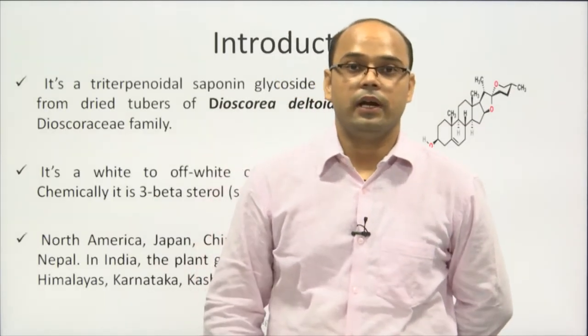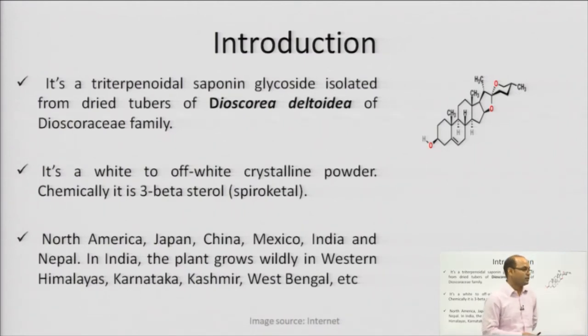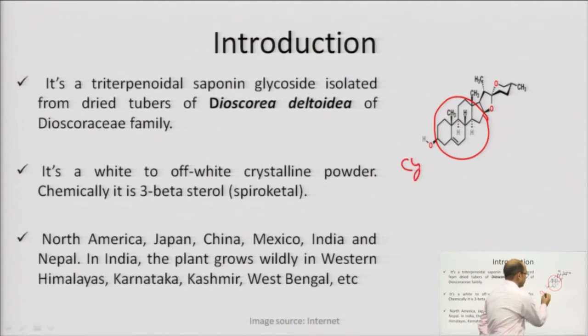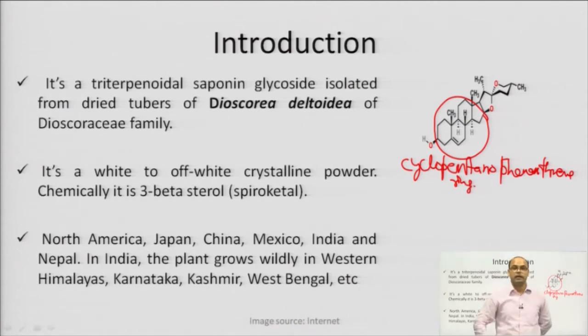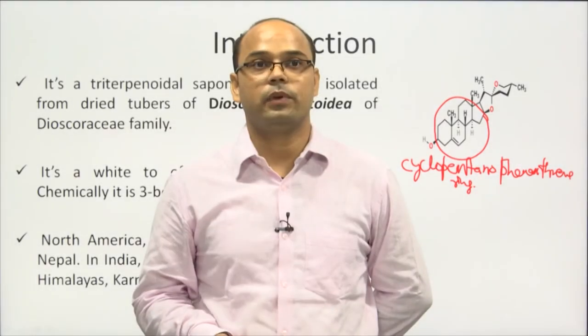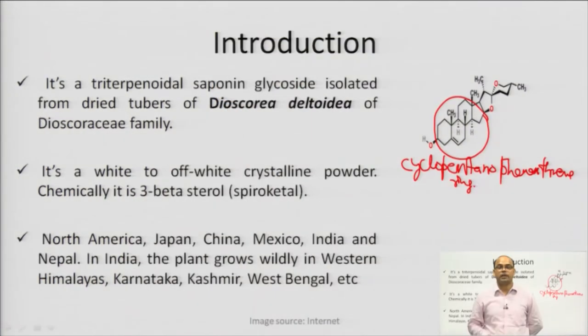Today we are going to cover the phytoconstituent diosgenin — its industrial production, utilization, and estimation. Diosgenin is a triterpenoidal saponin glycoside. If you look at its structure, you can see the cholesterol nucleus or the cyclopentanophenanthrene ring system, which forms the basis for various steroidal compounds. This nucleus makes the compound a saponin glycoside, and it is isolated from the dried tubers of Dioscorea deltoidea.